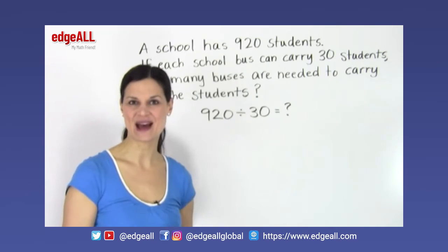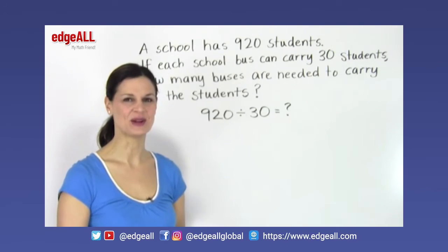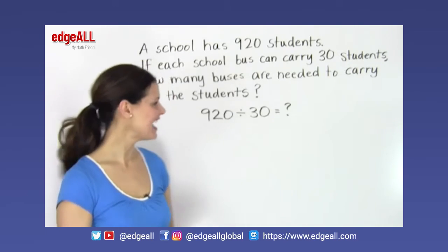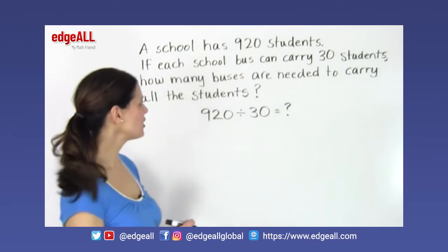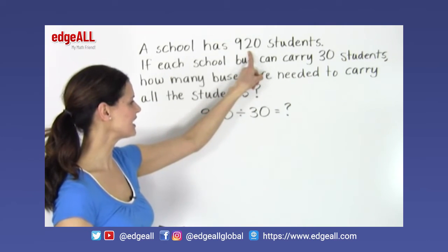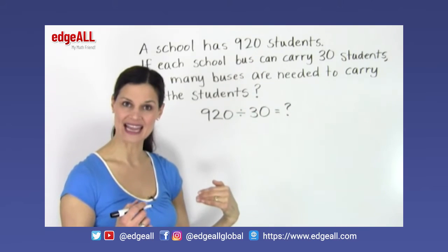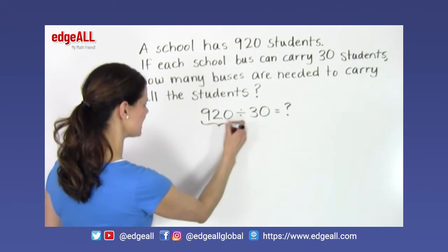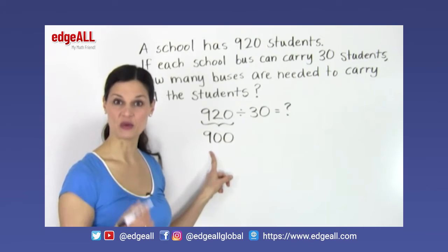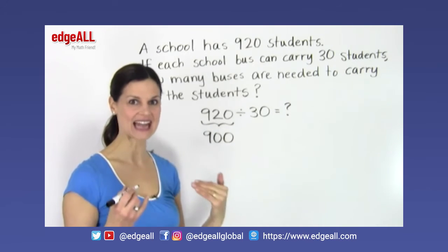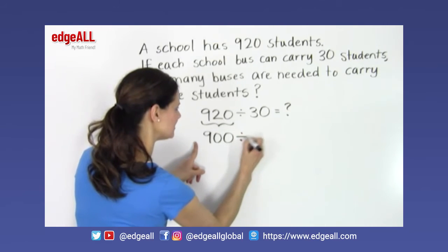We can't have a decimal in our answer because our answer, our quotient in this example, is representing number of buses. And we can't have 0.8 buses, for example, or 0.8 of a bus. And so in this case, we need to be working with whole numbers. So what we're going to do is we are going to take our dividend, so we're going to take our 920, and we're going to round it down to 900. So we can round this 920 down to 900. And as soon as we do that rounding, we need to remember that we're working on an estimation. We're not getting an exact answer.